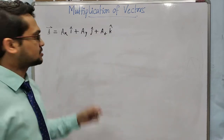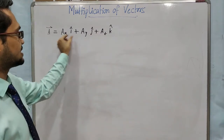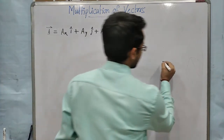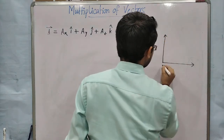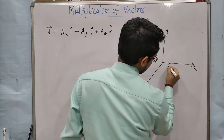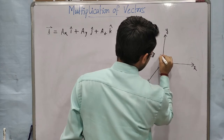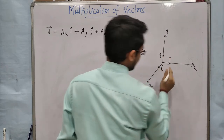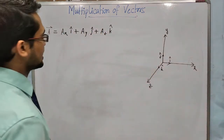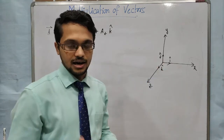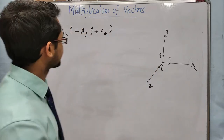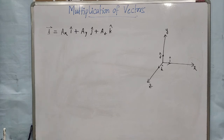Here, AX, AY, AZ are the components of this vector along x axis, along y axis, and along z axis. i-cap, j-cap, k-cap are the unit vectors along x, y, z axis. So this is i-cap, this is j-cap, and this is k-cap. Their lengths are equal and this is unit length. For that reason, these vectors are called unit vectors, and they are always perpendicular to each other.